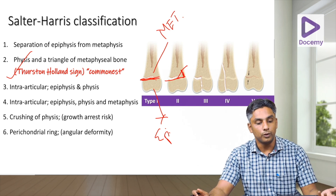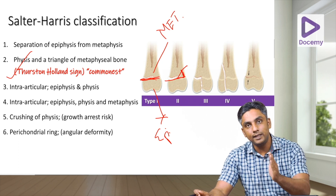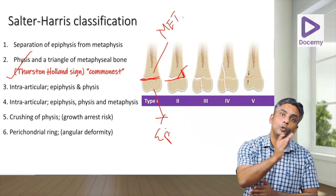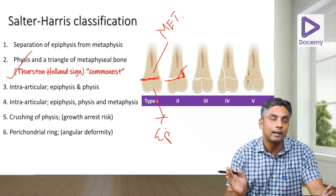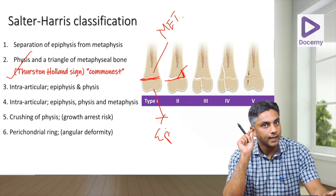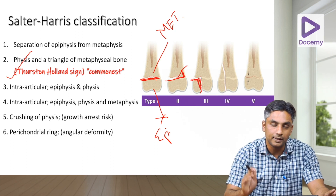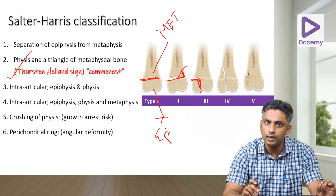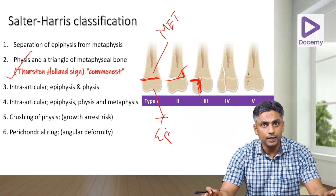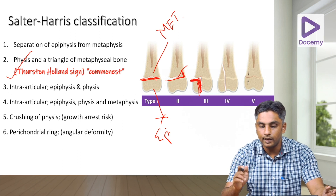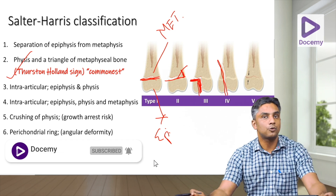Types 3 and 4 are intra-articular fractures because they involve the epiphysis. In type 3, the injury enters through the epiphysis and exits through the physis — it does not extend into the metaphysis. In type 4, the injury starts from the epiphysis but exits through the metaphysis, so there is involvement of the metaphysis as well.